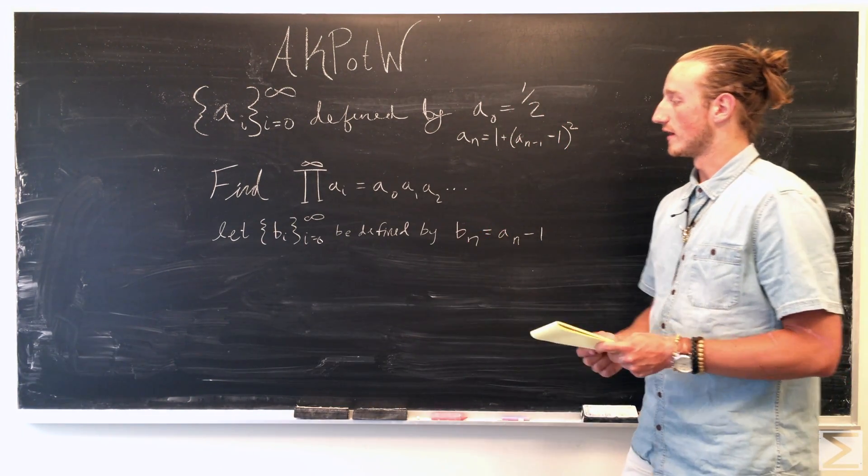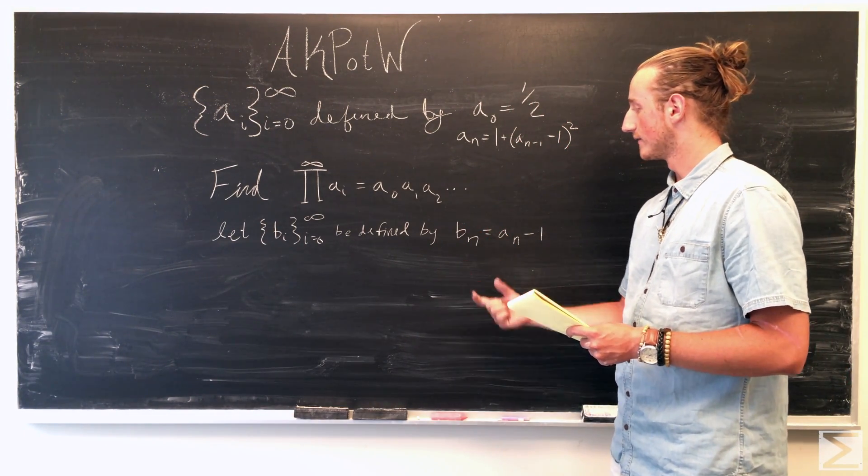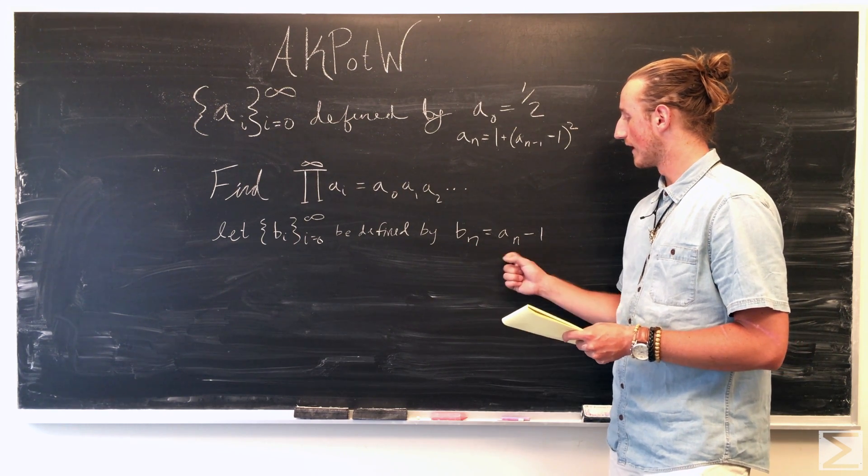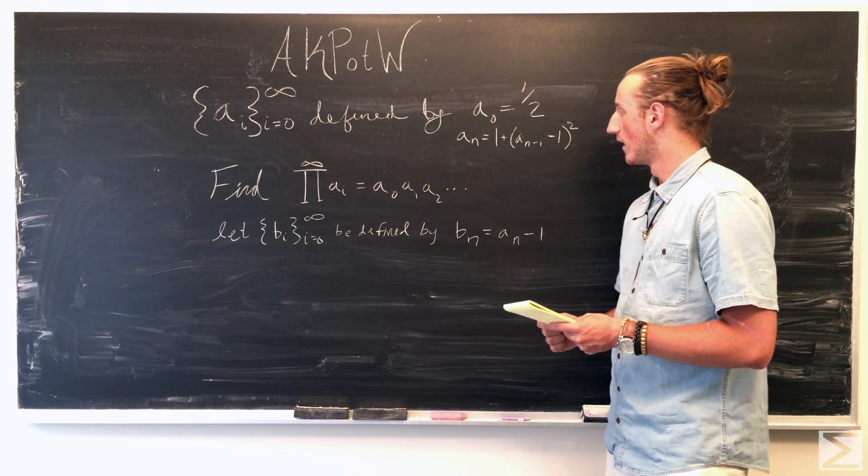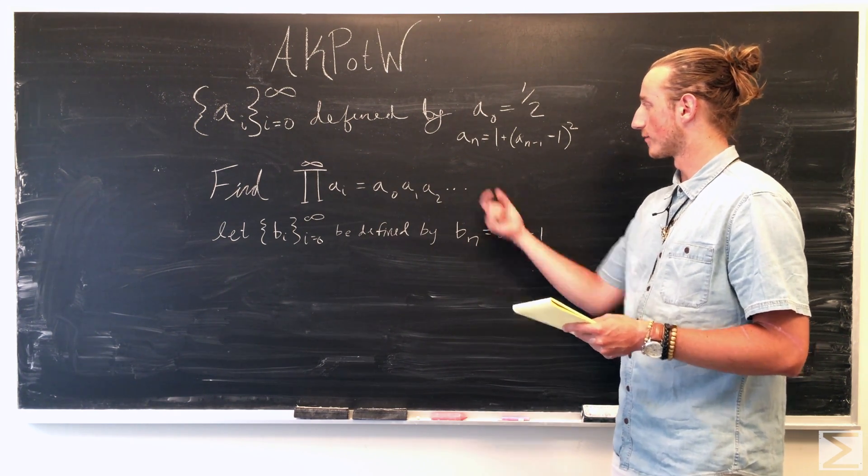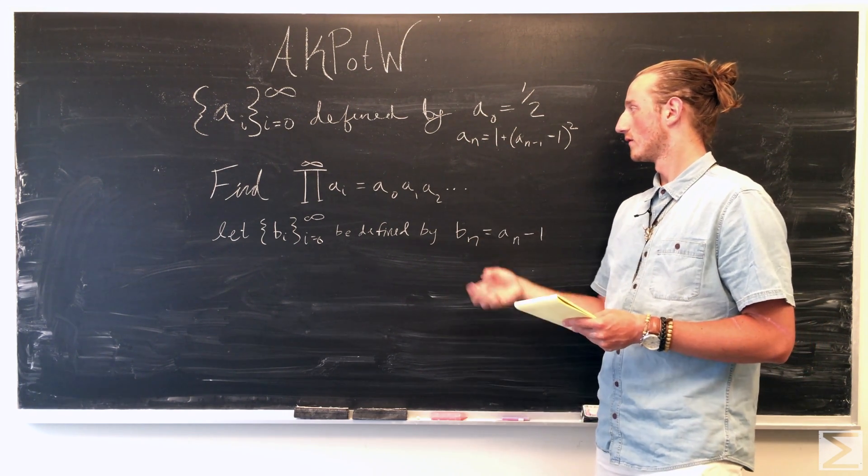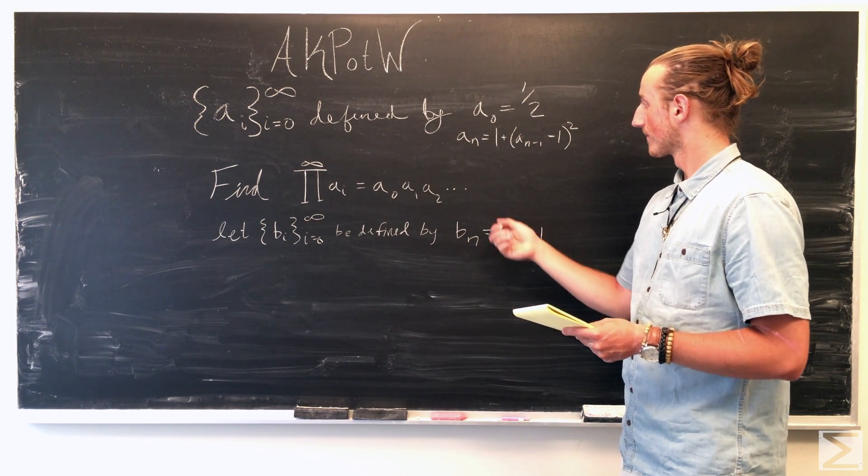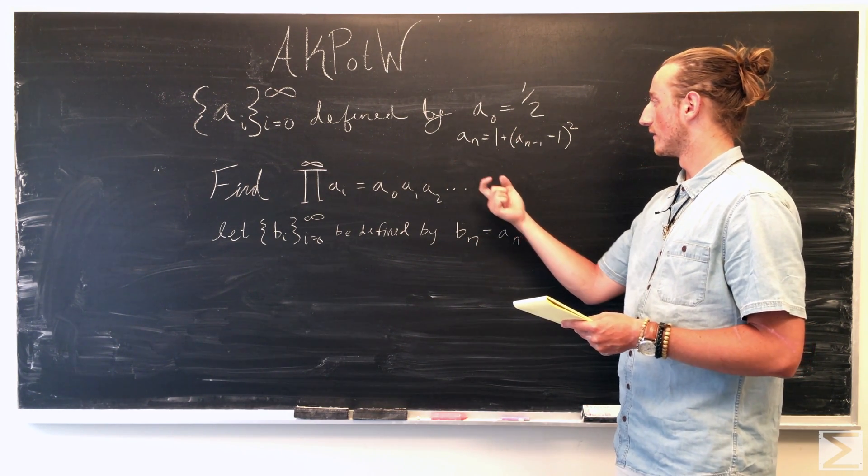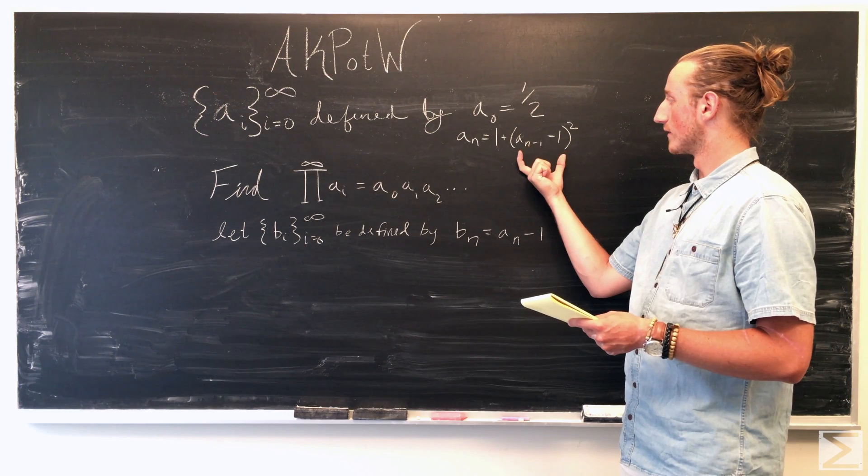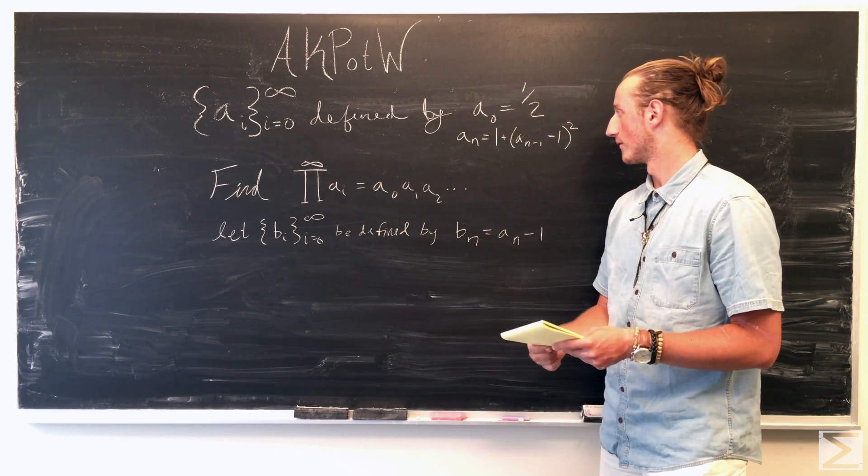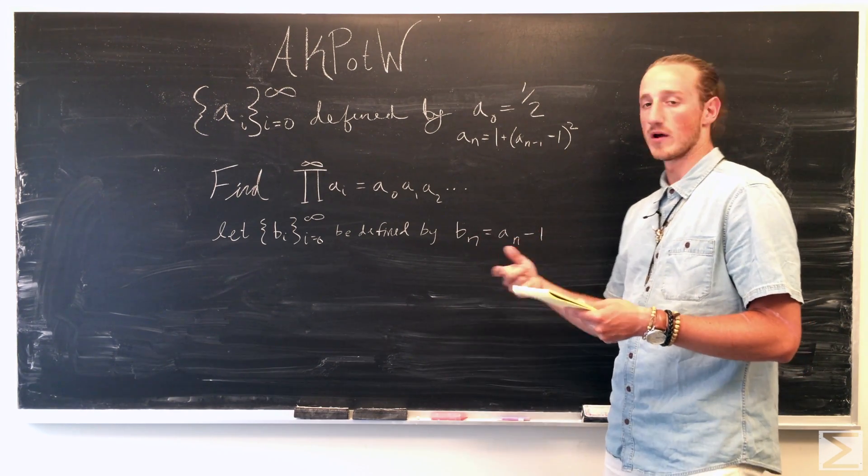So we're going to define b of i by saying b of n is equal to a of n minus one. So a of n minus one is just going to be a of n, and then this one will cancel out. So it's just going to be a of n is going to be equal to a of n minus one, a of n minus one minus one squared.